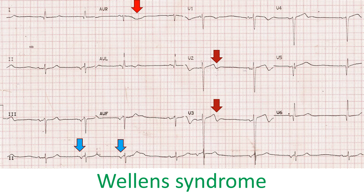Wellens syndrome is indicative of tight stenosis of the proximal left anterior descending coronary artery. Lateral leads show Q waves, and the QRS axis is a bit leftward, suggesting left anterior hemiblock.